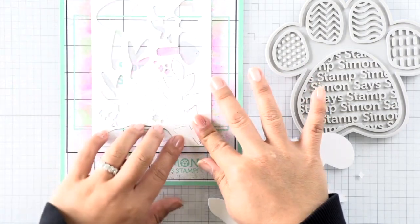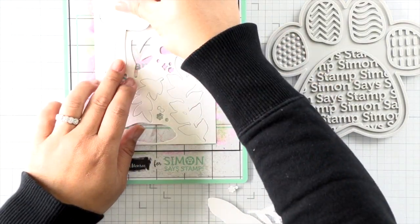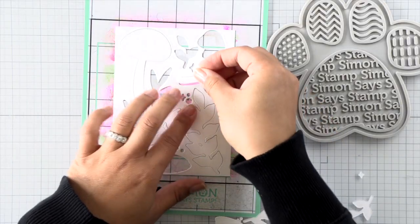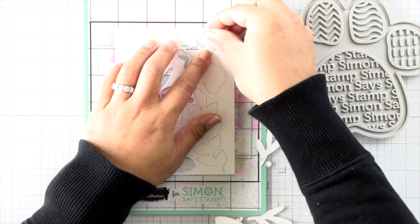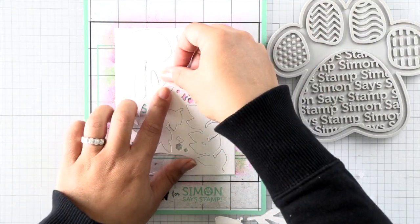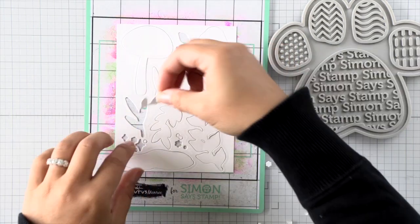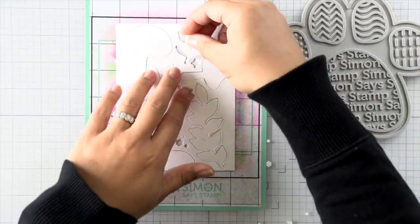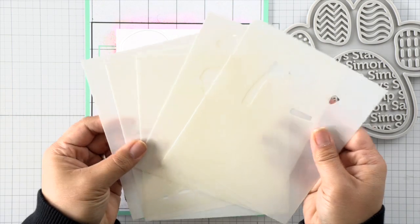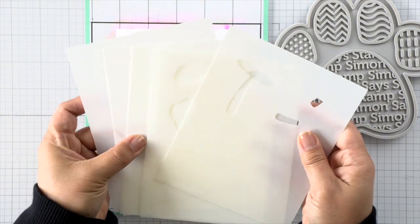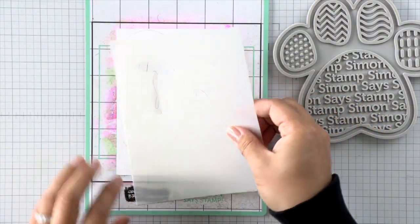If you were to stencil first and then die cut afterward, there's a chance that all those itty-bitty stars and sparkles on this stenciled image are not going to die cut correctly and you'll be upset with yourself. I actually started out stenciling first and after my first two layers I was like no, I think I'm going to have to start over. So here I am with take two.